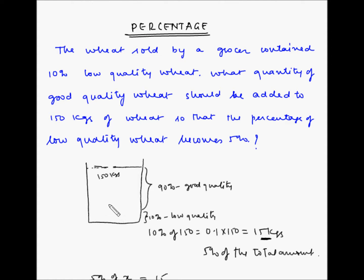Now let us understand another way of solving this problem. So we have been given that out of 150 kgs, 10% is low quality wheat. Now this 10% has to become half, that means it has to become 5% by adding good quality wheat. So if the percentage has to become half without taking out the low quality wheat, that means